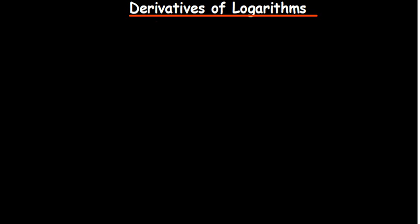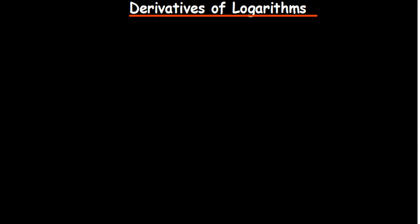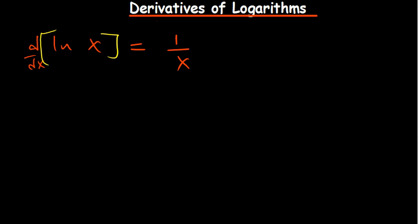Let's talk about the derivatives of logarithms. I'll begin with the natural log before we look at logarithms with different bases. The derivative of natural log of x is equal to 1 over x.